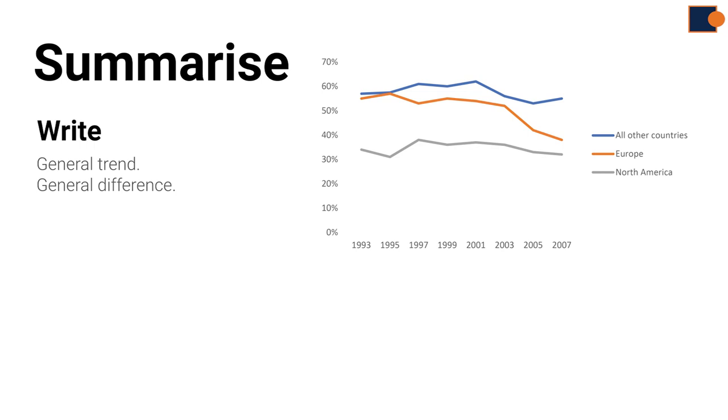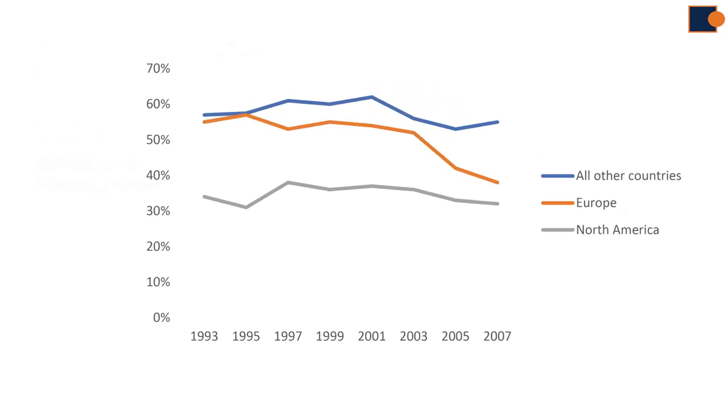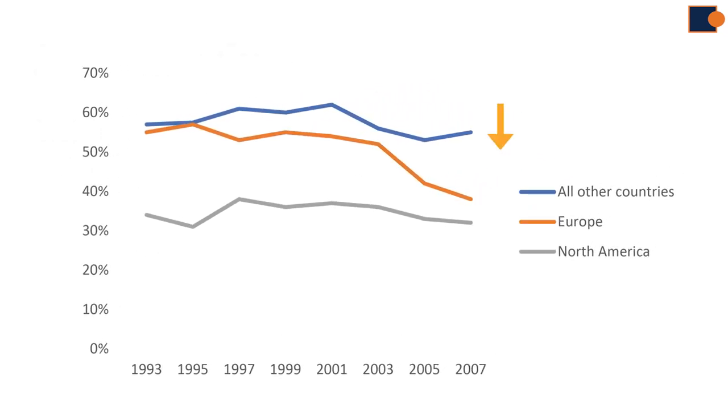In this example, all other countries show a downward pattern despite the fluctuation over the period. Europe has a clear downward direction, so there was a fall. And North America has a slow decline pattern as well. So popularity of package holidays has a declining pattern, generally speaking.